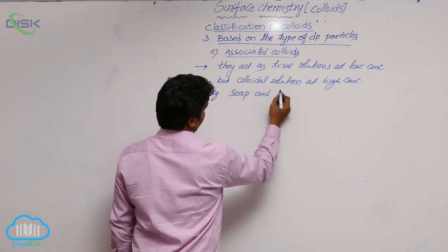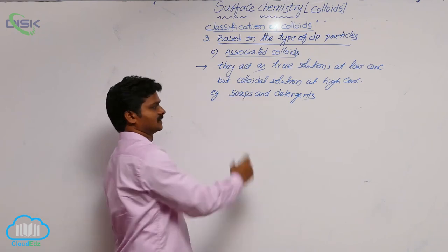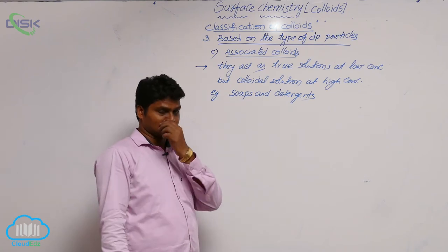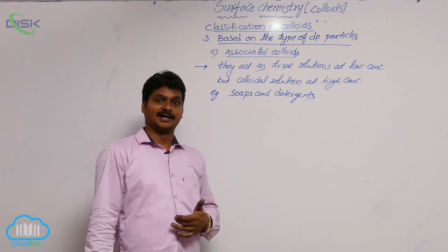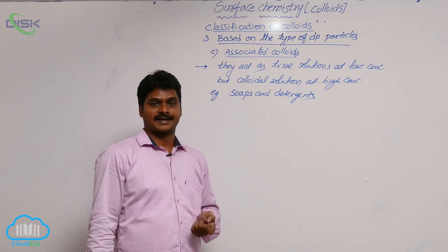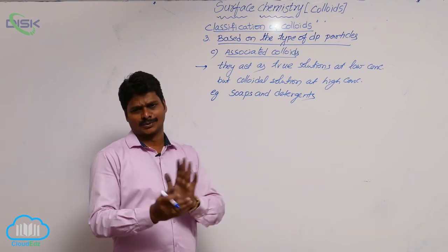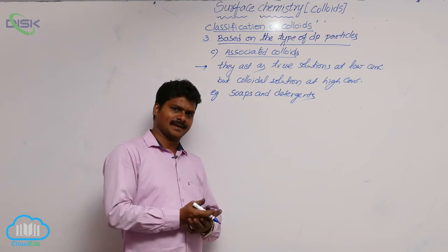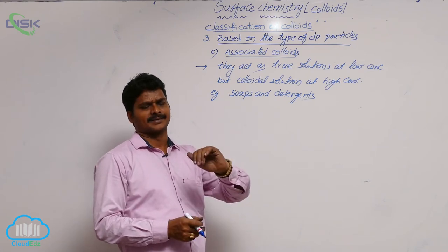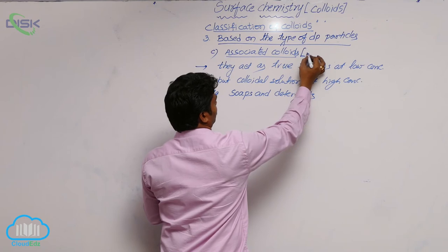Examples of associated colloids are soaps and detergents. If you take some soap — bar soap or bath soap — in low concentration it simply dissociates to cation and anion and acts as a true solution. But when its concentration is increased and temperature is increased, after a certain temperature and concentration, association of particles occurs. These associated particles have a specific name: micelles.